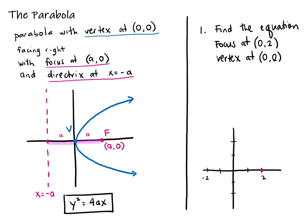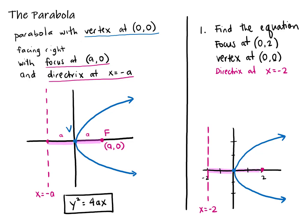I'm going to put my focus at (0, 2) in pink and my vertex at the origin in blue. The distance from the focus to the vertex is 2, so we go that distance in the opposite direction to find where our directrix is. Our directrix is vertical, so the equation is x equals negative 2. The parabola will be drawn facing right. The only piece of information we need to fill in is the a value, which is 2. Therefore my equation is y² = 4(2)x, or y² = 8x.